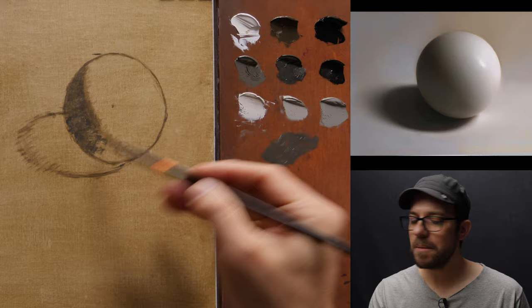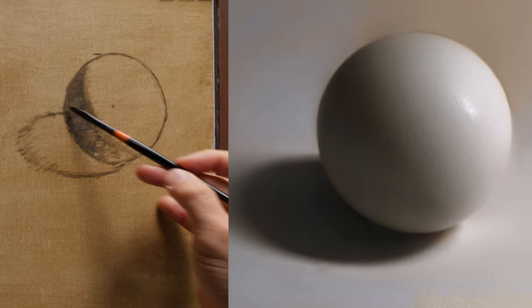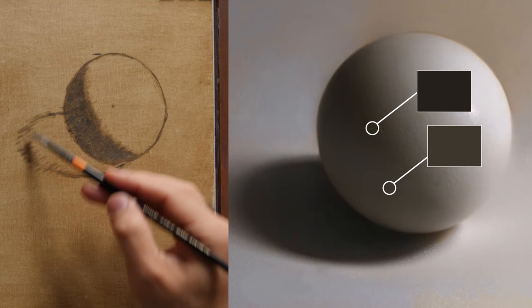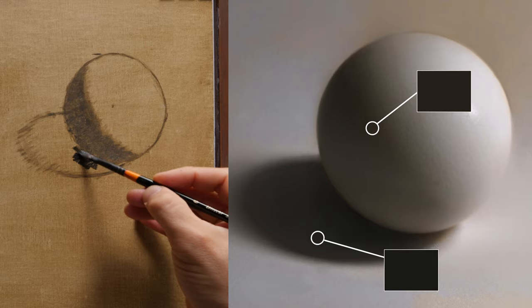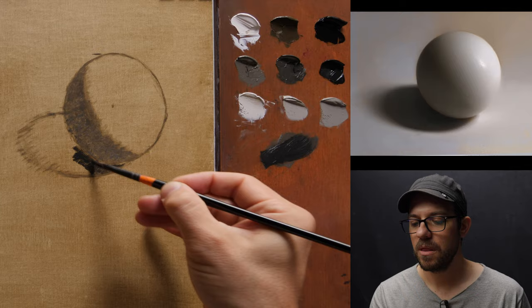Now as I'm laying this in, one thing you want to notice is at the top here naturally in that source image, at the top where we don't have any bounce light coming into it, it's quite a bit darker than what we have at the bottom. So let me go ahead and block in the cast shadow now. Now you'll notice that the cast shadow is significantly darker than what the form shadow is. I'm going to start by making that indication. I know that eventually this little area of ambient occlusion underneath the form of the sphere is going to be our darkest dark.